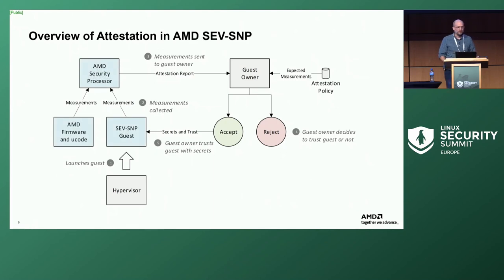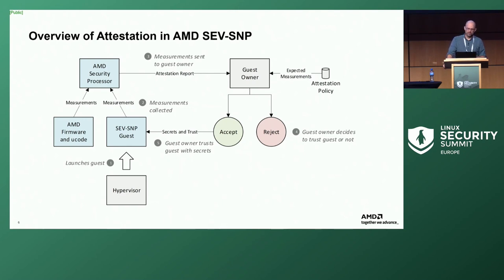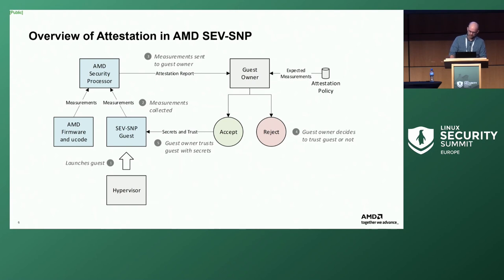In attestation, the hypervisor launches the guest, the security processor grabs information about how the guest was launched and about the platform, produces an attestation report, sends it to the guest owner, and then the guest owner is responsible for making the yes or no decision. Only at that time does the guest actually get trust — be it trusting the workload or trusting the guest to touch their secrets — and the guest owner provides that through some channel it sets up with the guest. In SNP, our security processor is the one doing all the measurements, collecting AMD firmware, x86 microcode, etc., during launch.